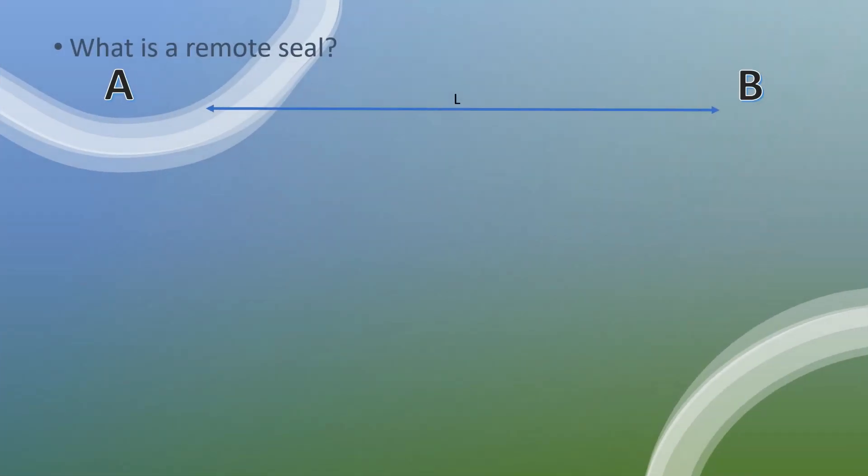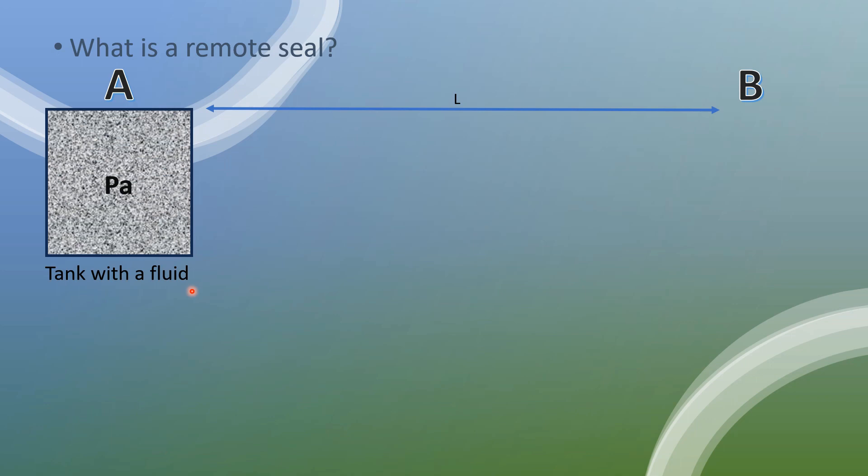What is a remote seal? A very simple way to put that is a way to reflect the pressure that's in point A to a point B, separated by such a distance L for instance. Let's consider an initial tank here with a fluid and on the other side a pressure sensor.